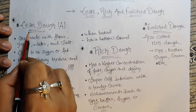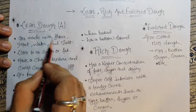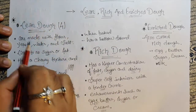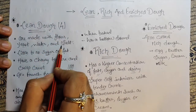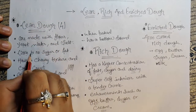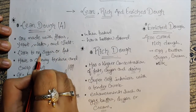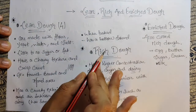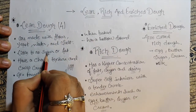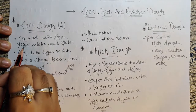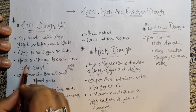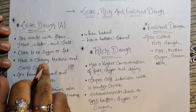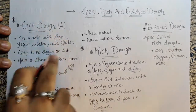The first is lean dough, which is made with flour, yeast, water, and salt. Lean dough has little to no sugar or fat — thoda sa sugar ya phir thoda sa fat, ya phir not at all. We generally use a little bit of sugar because you know sugar is yeast's food. Lean dough has a chewy texture and a crisp crust.